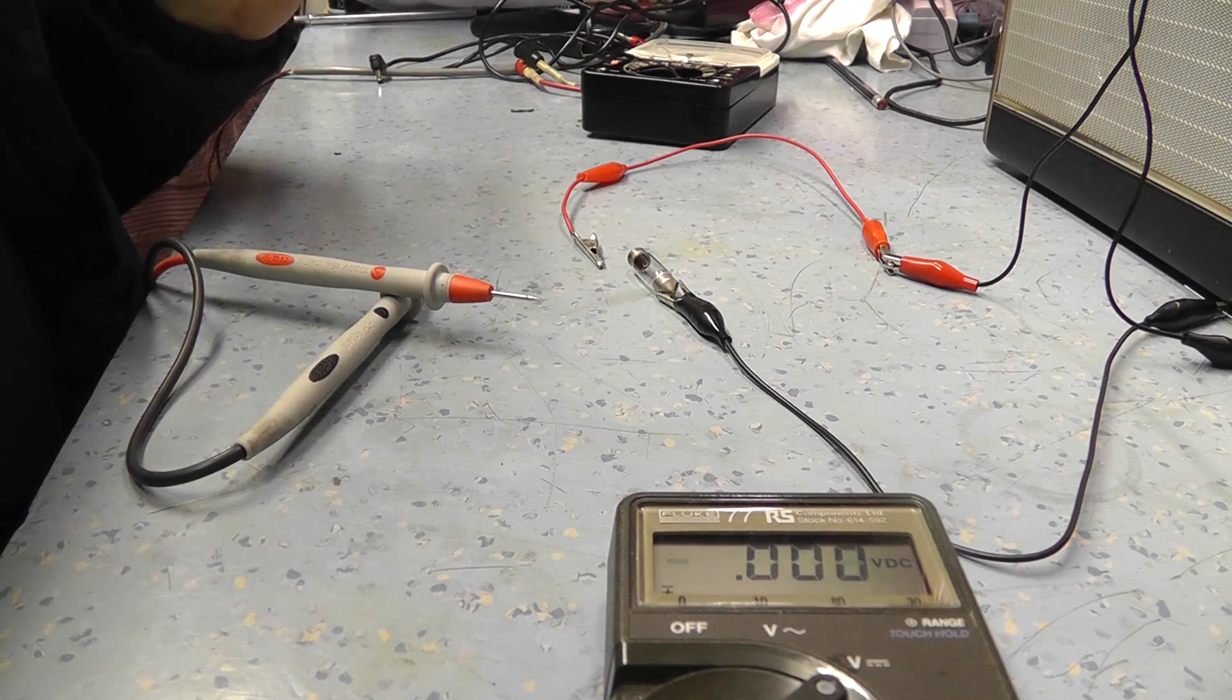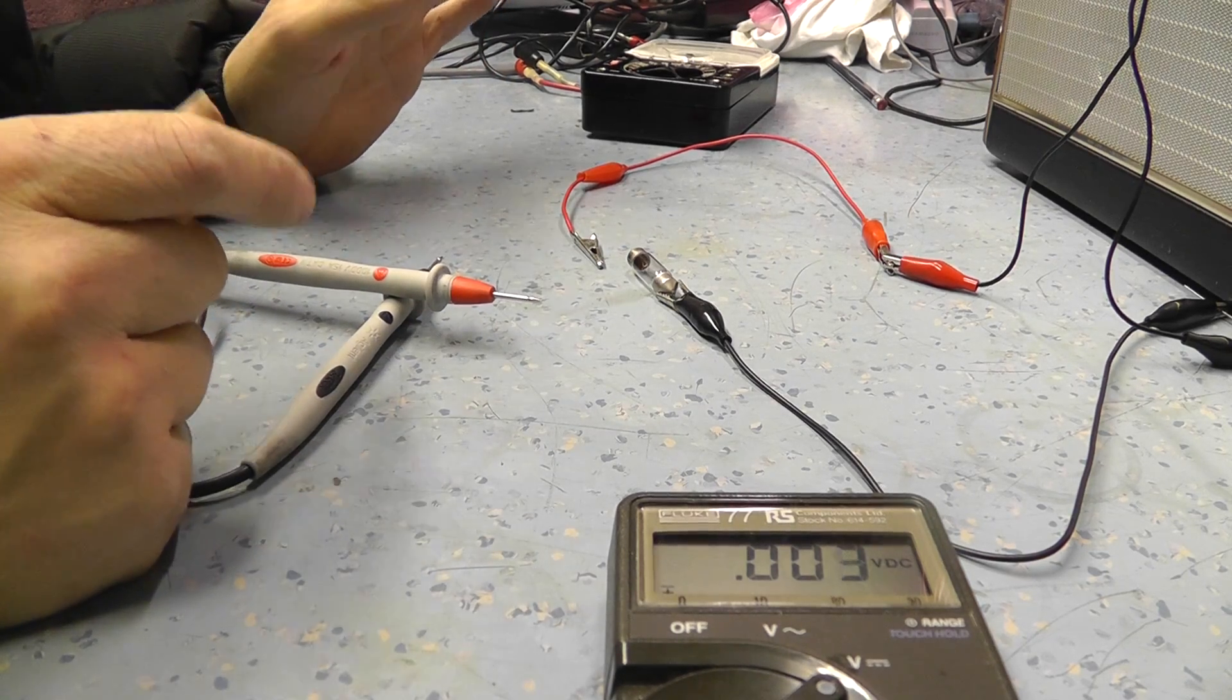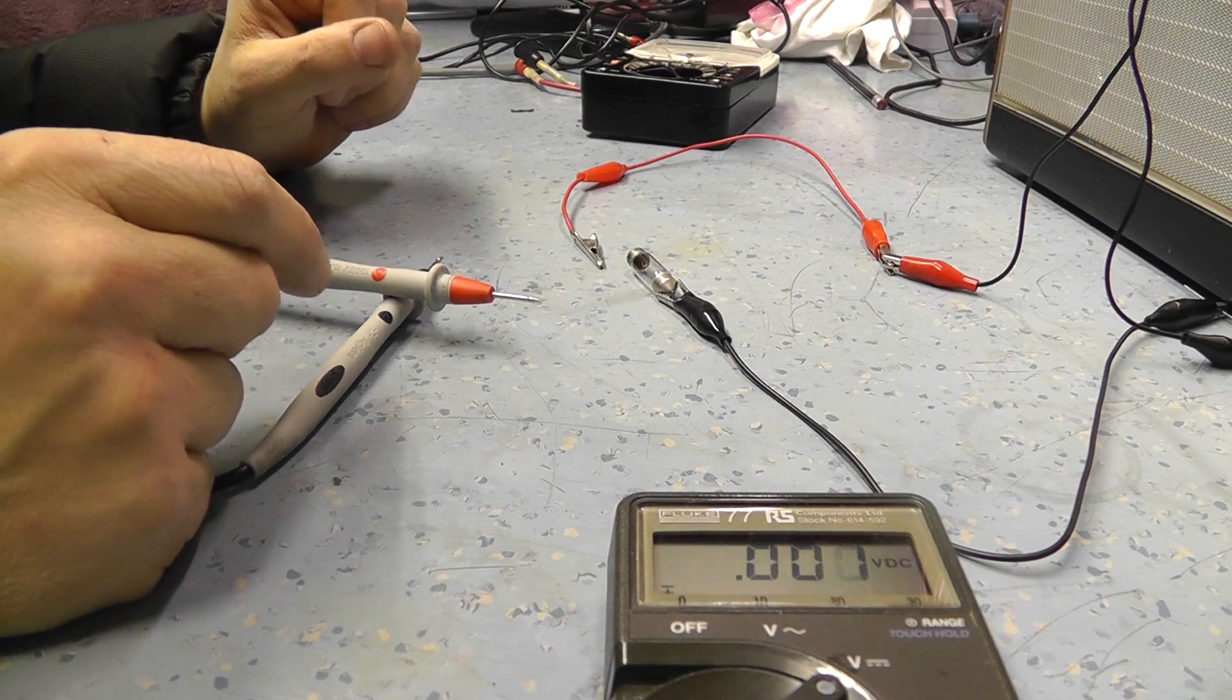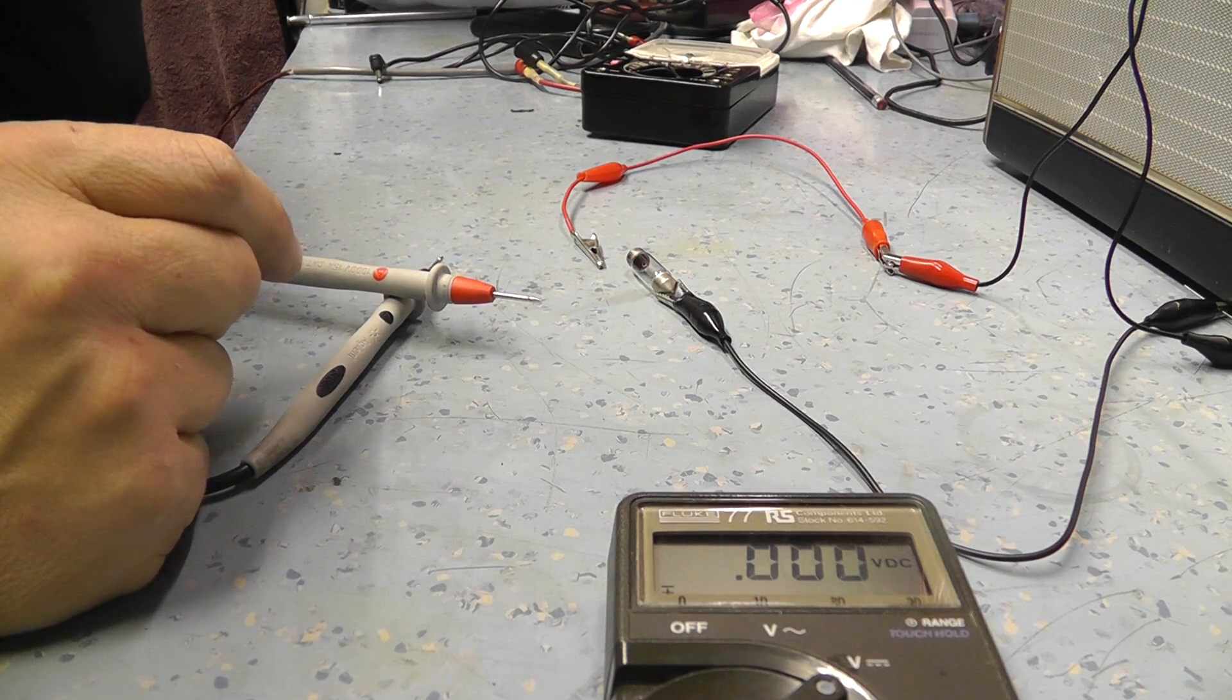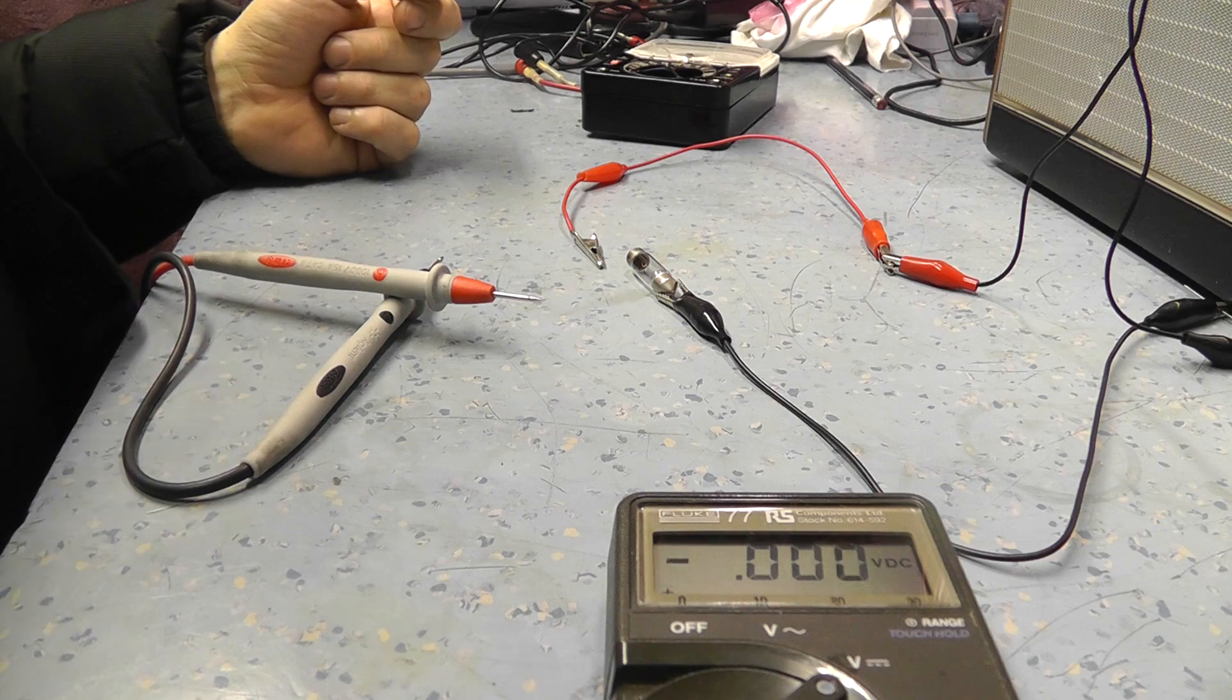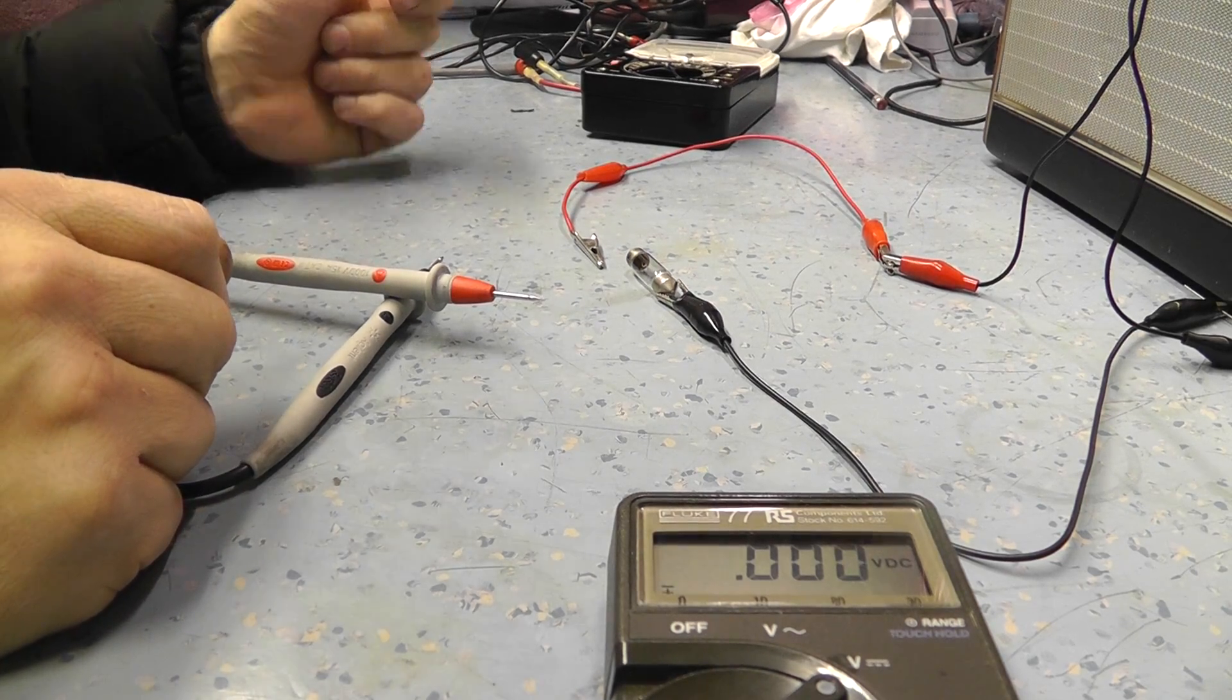This is something that's caught out a lot of people in the past, especially with automotive wiring, and wiring that's exposed to the elements and things like that. It doesn't have to be just automotive wiring, but it can be anything that's liable to corrosion or bad connections.